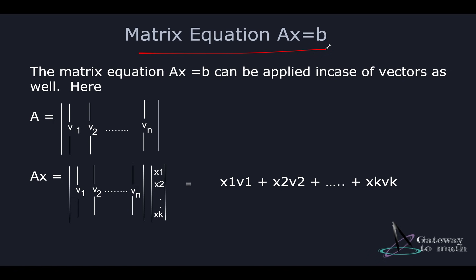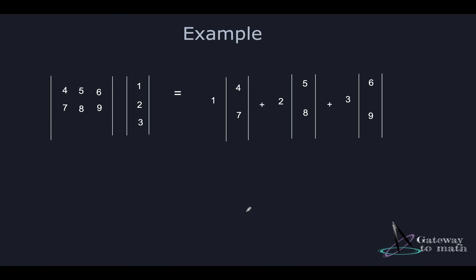We've seen the matrix equation Ax = b — if you've been following the matrix videos you'll know how important this is. I can represent Ax = b in the form of a vector equation: A becomes the vector matrix and x becomes the scalar matrix, and when you multiply them you get a linear combination of the columns. For example, with vectors v1, v2, v3, the scalar 4 multiplies v1, 7 multiplies v2, and so on.